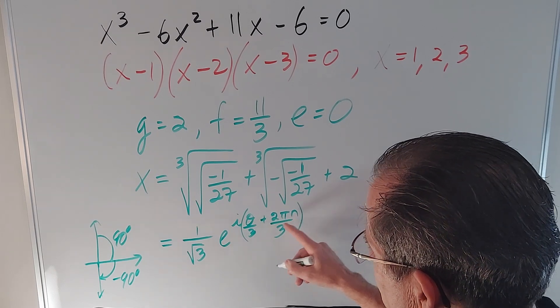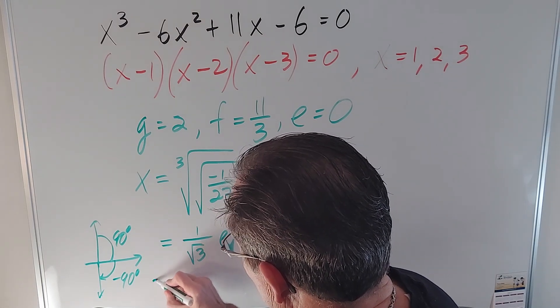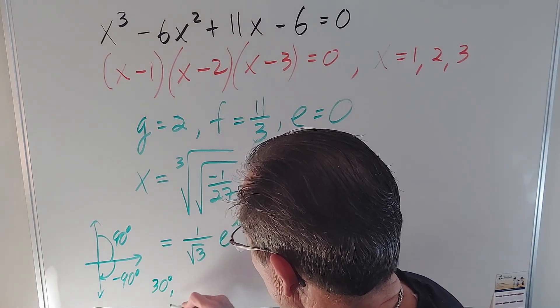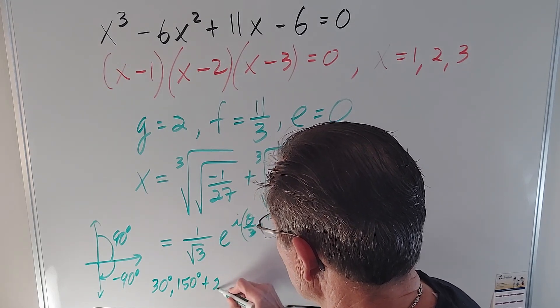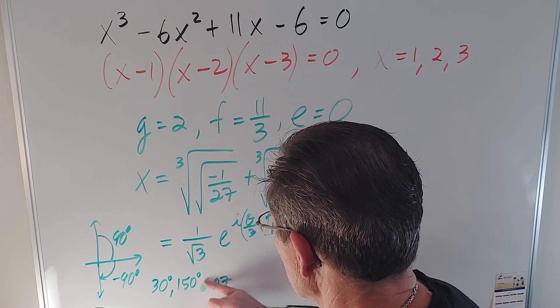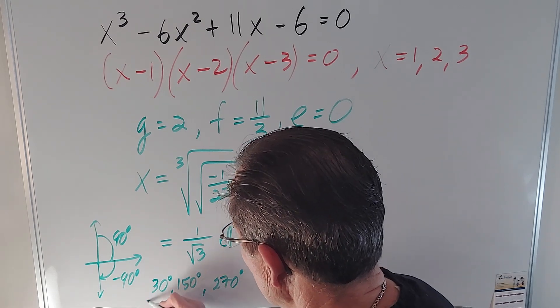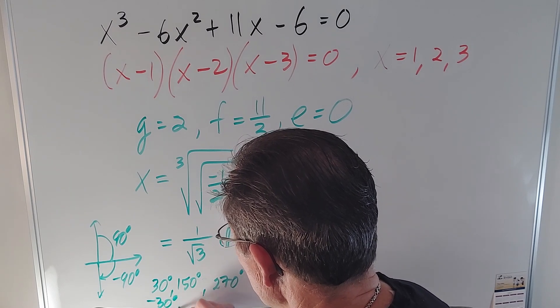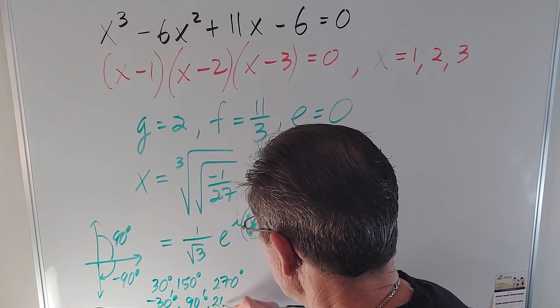So I'm going to get, for this one, 30 degrees plus 120, 150 plus 120, 270. And for this one, I'm going to get negative 30, 90, and 210.